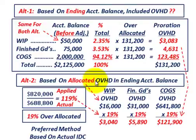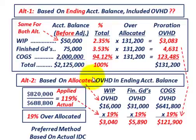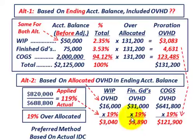Alternative two is preferred because it's based on actual indirect costs — that's the preferred alternative between alternative one and alternative two. The amounts come out pretty close when you compare what has to be prorated or removed from each of the accounts.